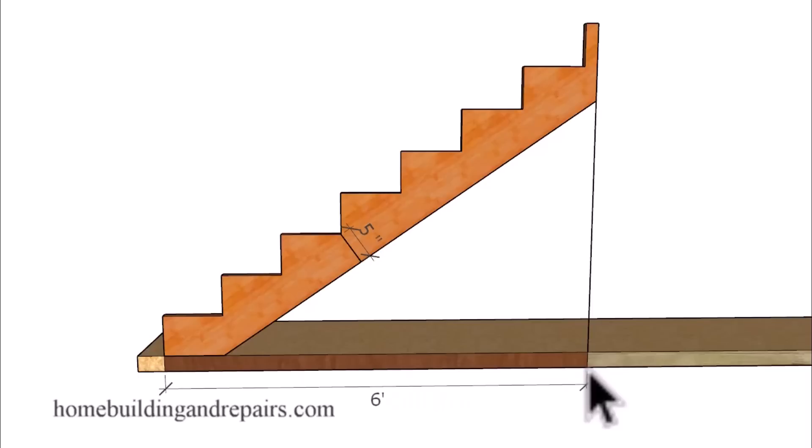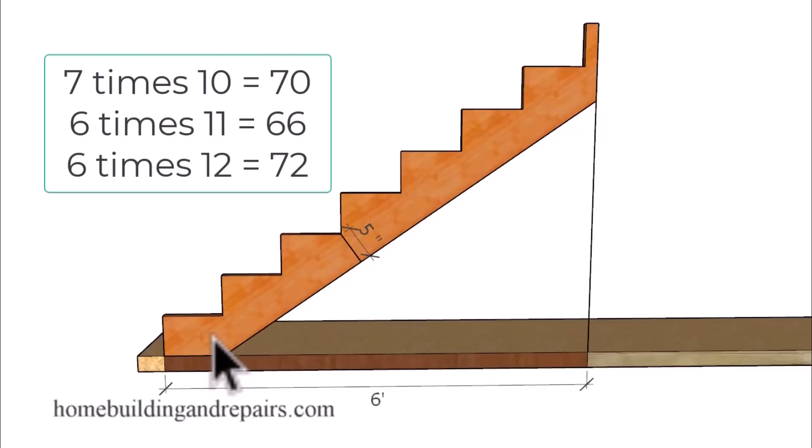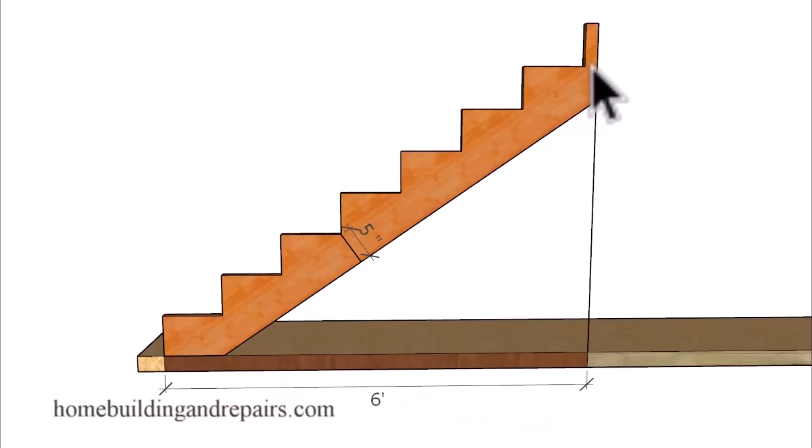And I think the easiest formula for you would be to have no more than seven 10 inch steps, or six 11 inch steps, or six 12 inch steps. And you can do the math on that. Six times 11 is 66. Six times 12 is 72, or six feet right on the money. And seven times 10 is 70, making it less than 72 inches.